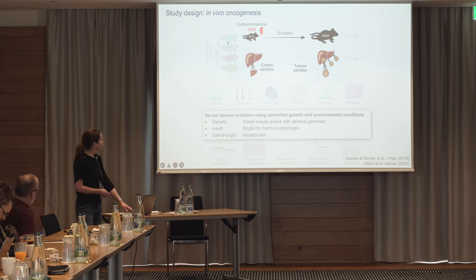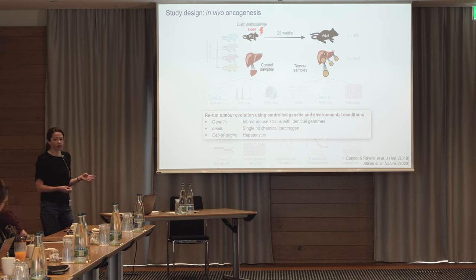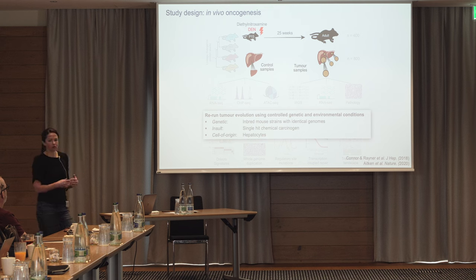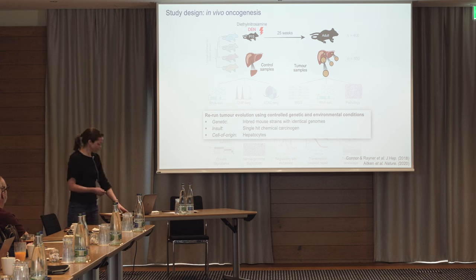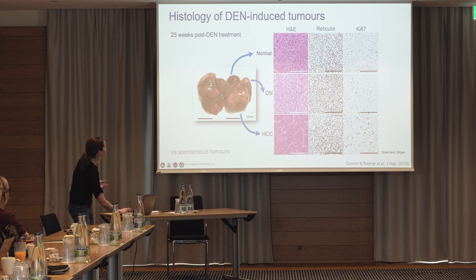We have a mouse experiment where we expose 15-day-old mice to a chemical called diethyl nitrosamine — we'll call that DEN. We take control samples from those mice, so we have normal liver, and then we wait for 25 weeks until these mice develop tumours. This enables us to have an identical genetic background — these are inbred mice. We use a single hit of one carcinogen to induce the tumours, so they've all had exactly the same exposure, and because we know how this chemical works, we know what the cell of origin is of the tumours that arise. Each liver comes out with lots of different tumours — great big ones and smaller ones — as well as some background liver.